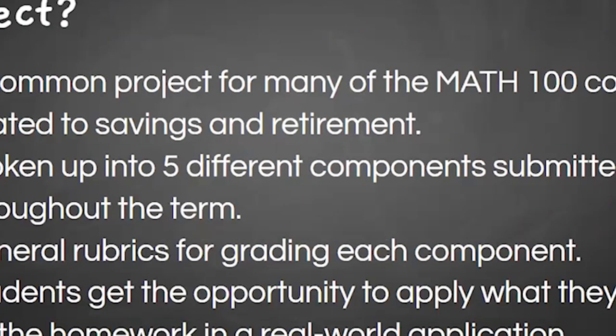So in the Math 100 course, we have a term project. This is a common project that multiple instructors use, so it is very broad. It's broken up into five different parts throughout the term so students can work on individual pieces instead of submitting one huge project at the end. This is important because if calculations are incorrect, you can't have accurate analysis. Because it's a common project with multiple instructors, the rubrics are very general and broad — you can see the rubrics and project directions in the link I shared in chat.